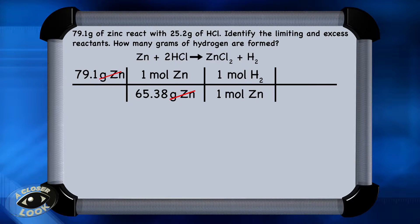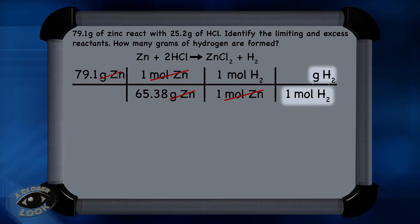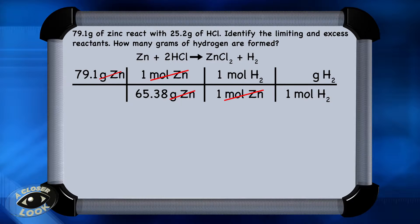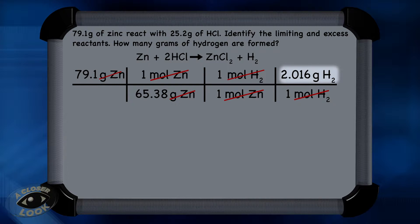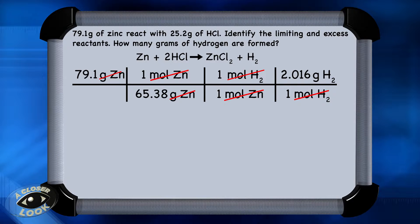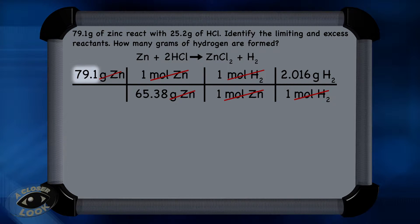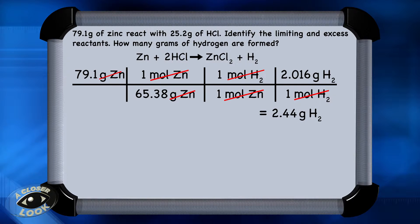In the last step, convert from moles of hydrogen to grams of hydrogen using the molar mass of hydrogen, which is 2.016 grams. Now the conversion part is complete. Multiply across the numerators and do the same for the denominators, then divide those two results. When we do that calculation, we find that if we have 79.1 grams of zinc, according to this reaction, we can make 2.44 grams of hydrogen. So that's one possibility for the amount of hydrogen that can be produced.